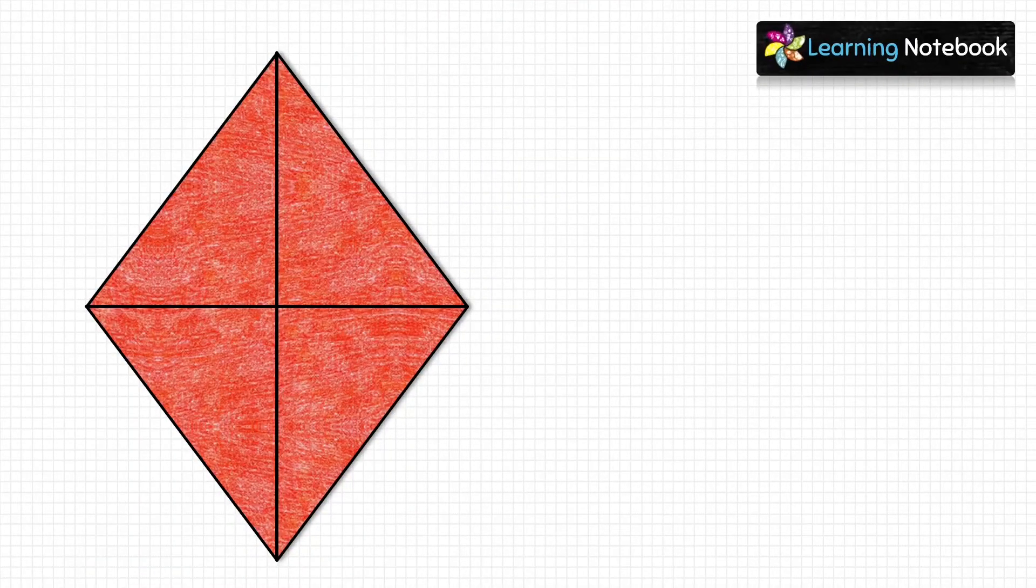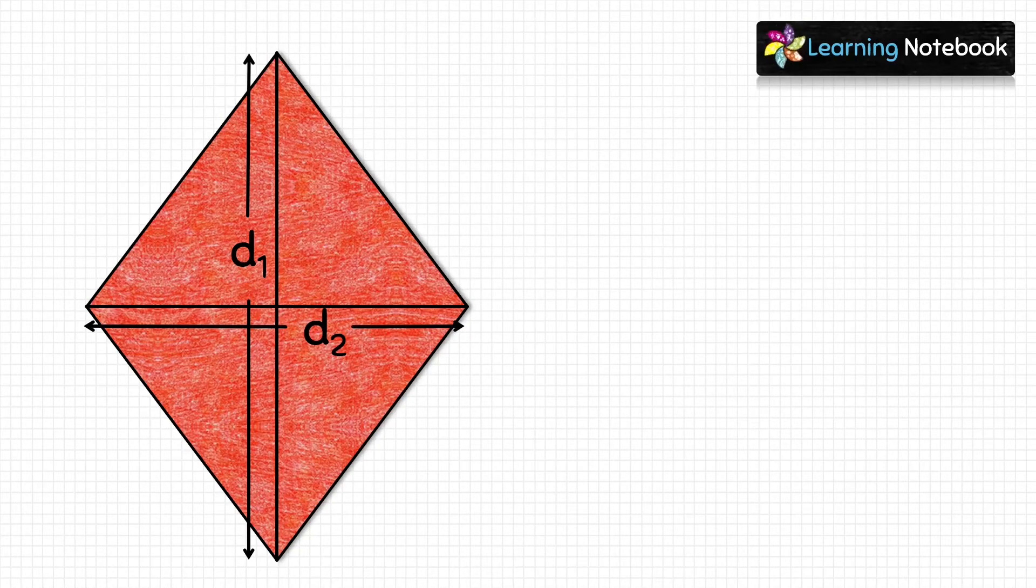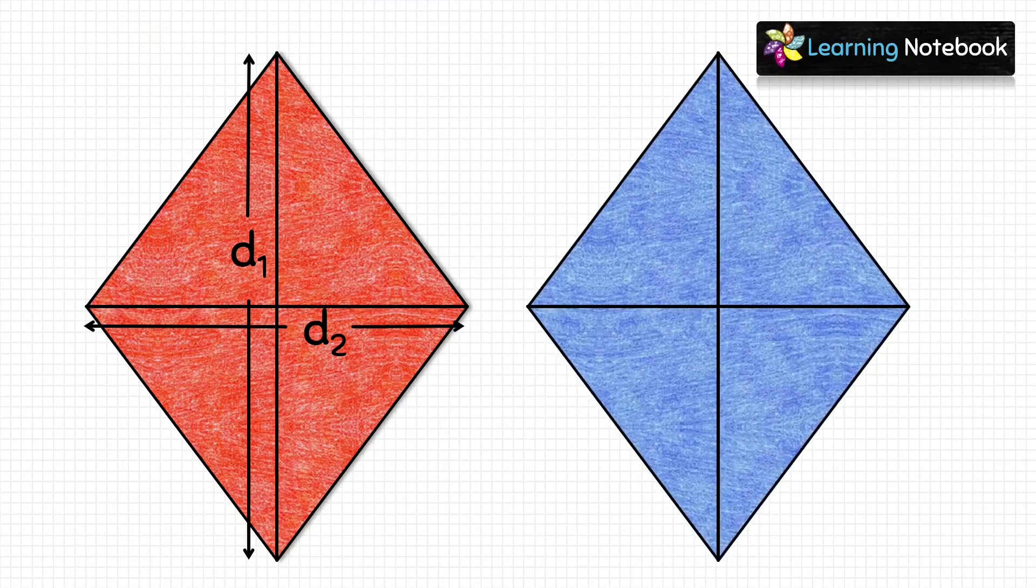Now let's mark the diagonals of red rhombus as d₁ and d₂. Then take the blue rhombus and cut along its diagonals as shown here.